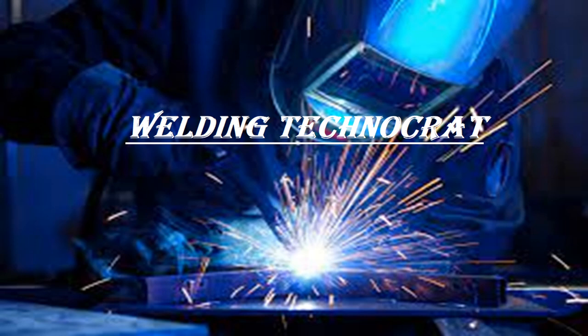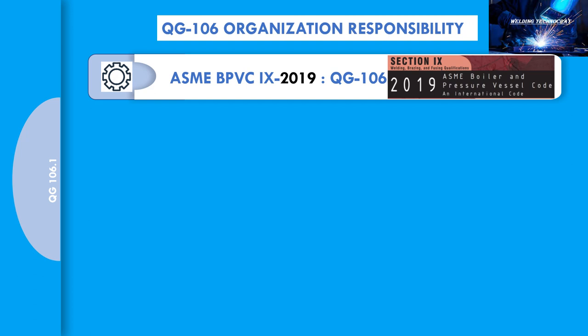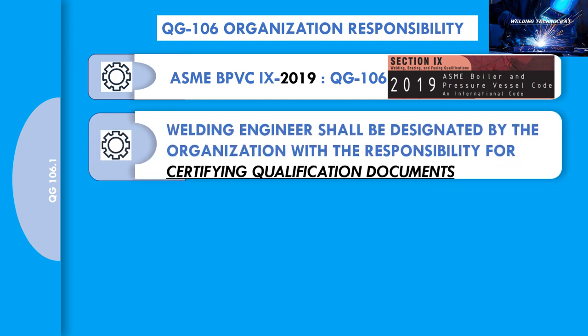Welcome to the Welding Technocrat YouTube channel. The 2019 edition of Section 9 added a requirement to paragraph QG 106 that organizations must define the responsibilities of welding engineers. The main responsibility given was for certifying qualification documents.